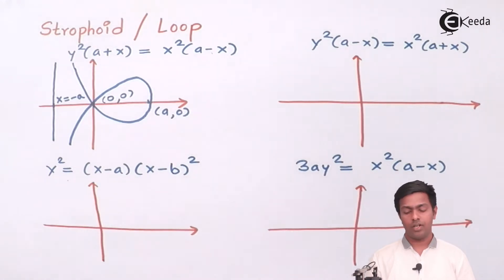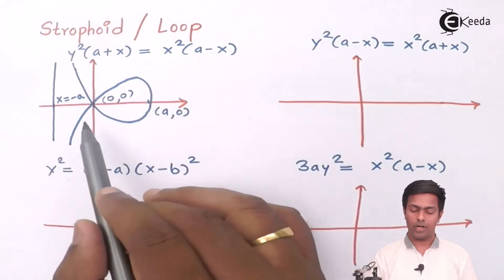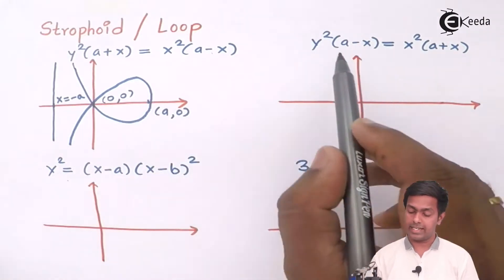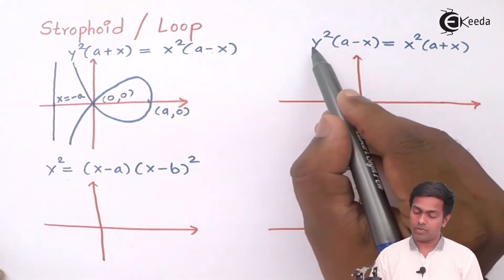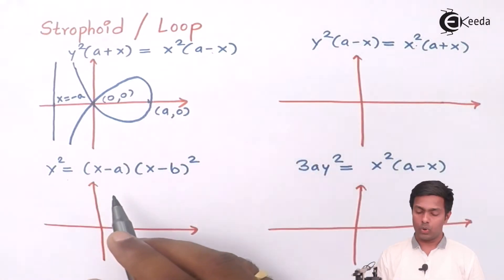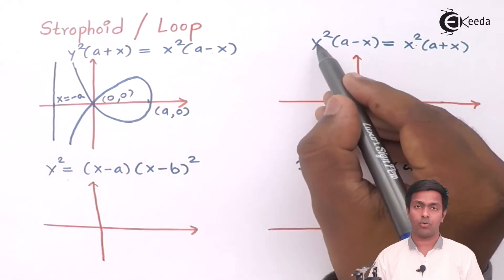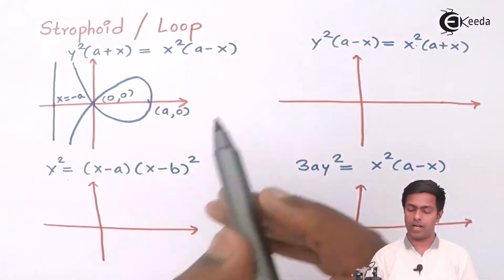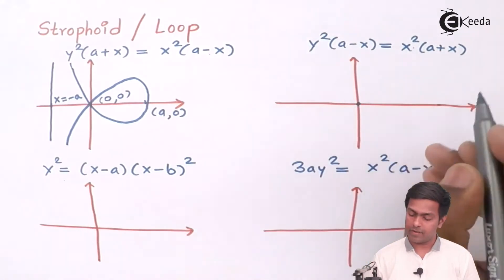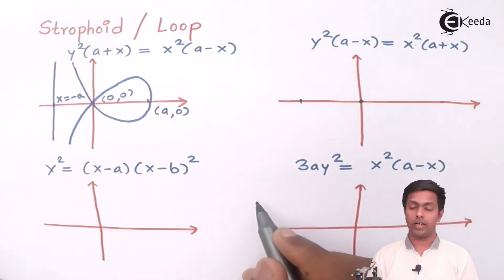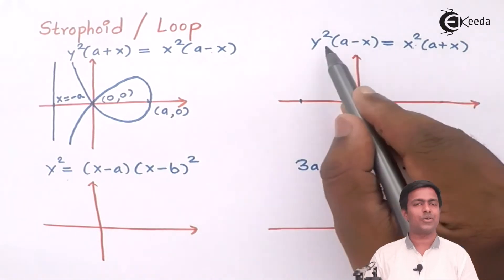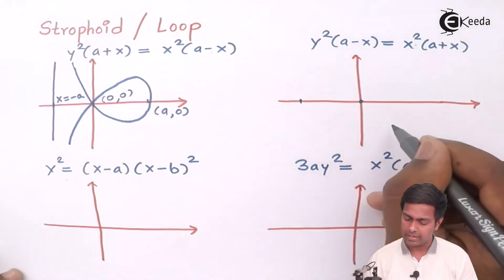In the exam, we generally require the shape of the loop — whether it opens left or right — and the asymptote. For the next curve, the square terms give (0, 0) as the knot. Putting y = 0, we get x = 0 and x = −a, so −a is plotted on the left side. The knot is at (0, 0), so the loop opens toward the left side around these two points.